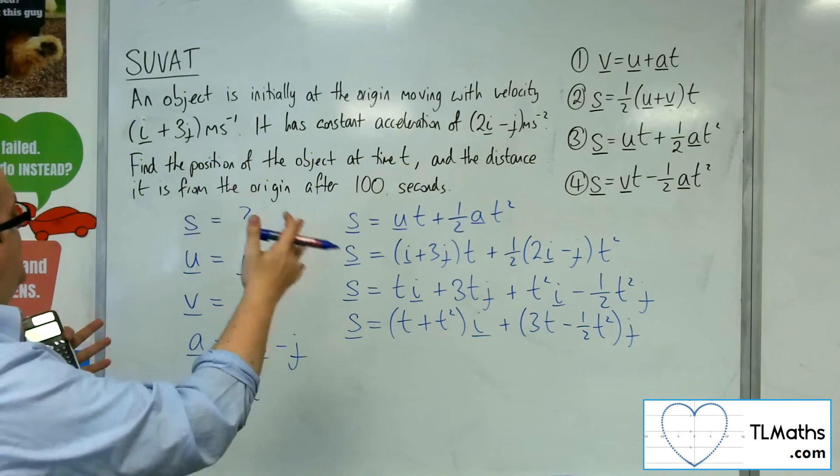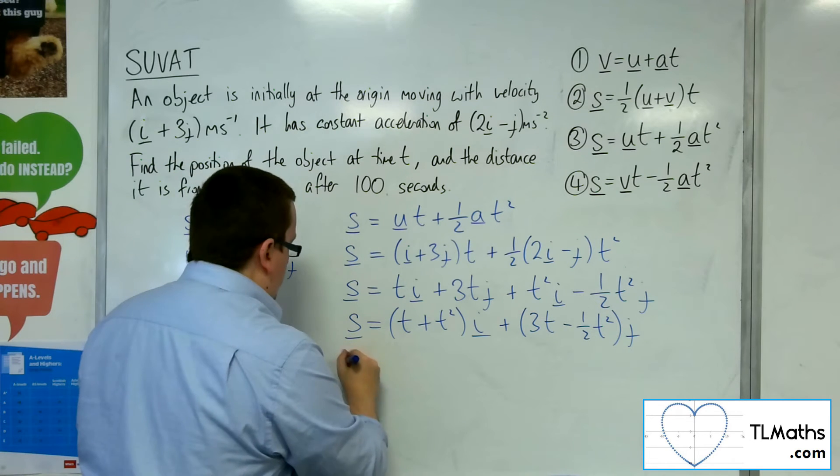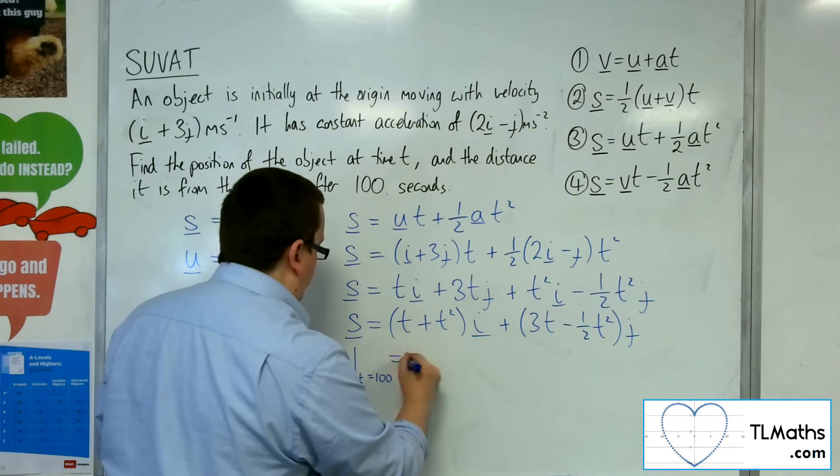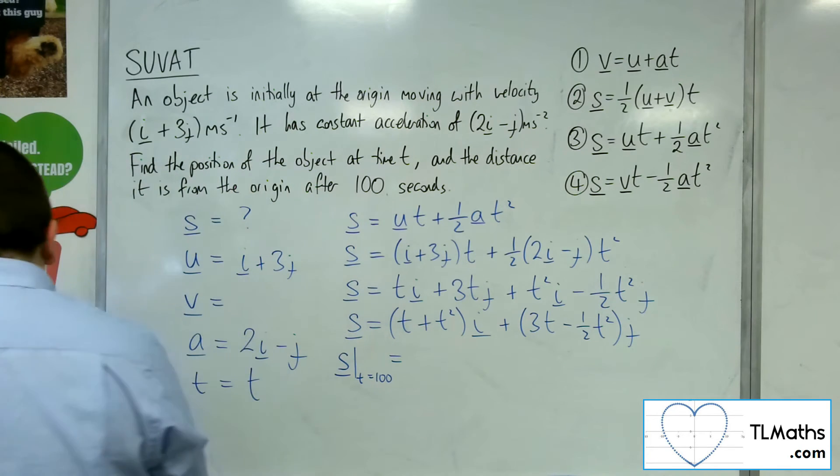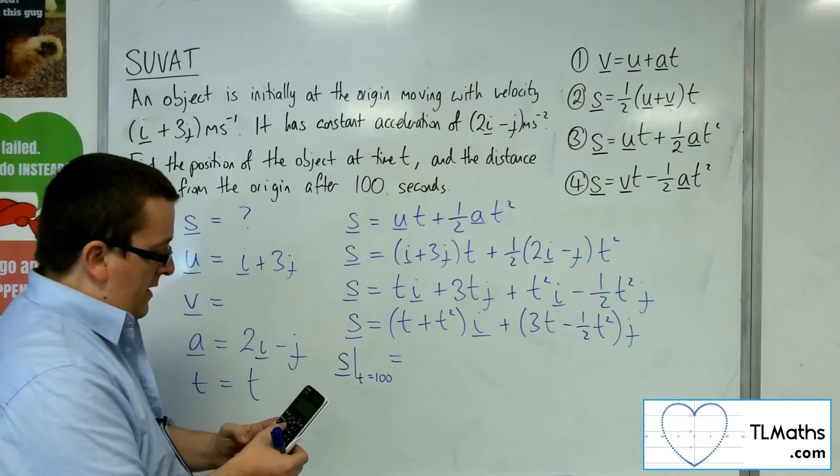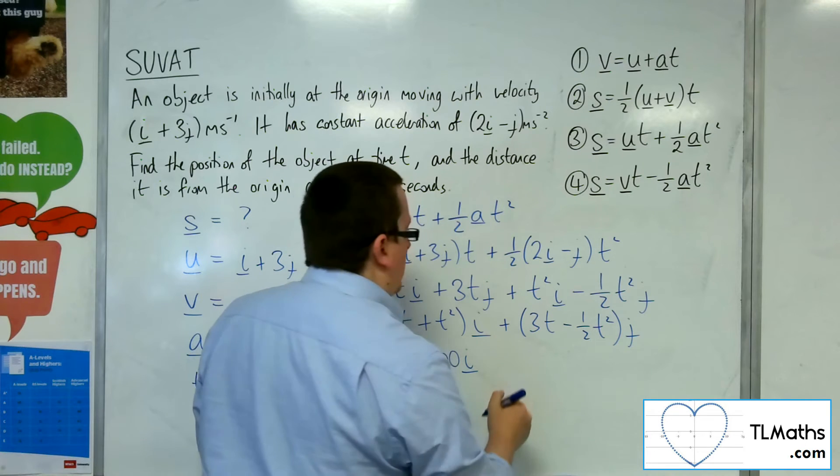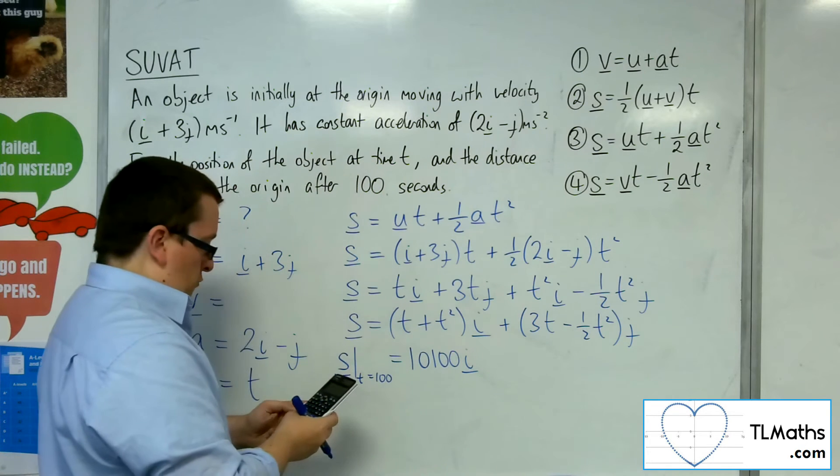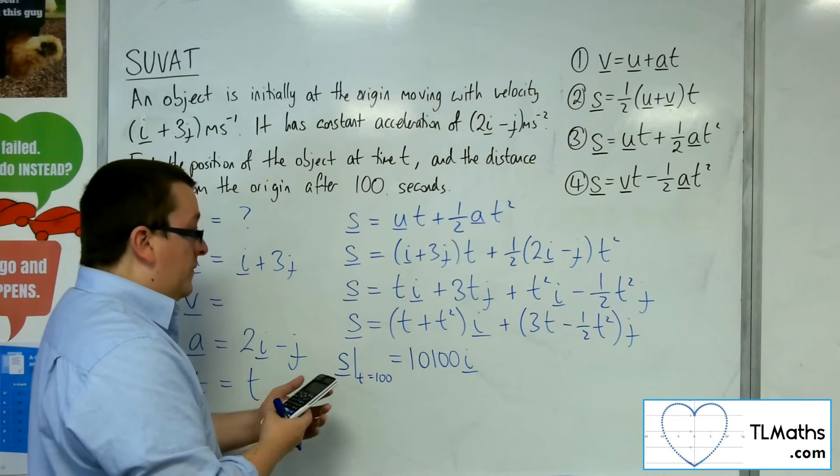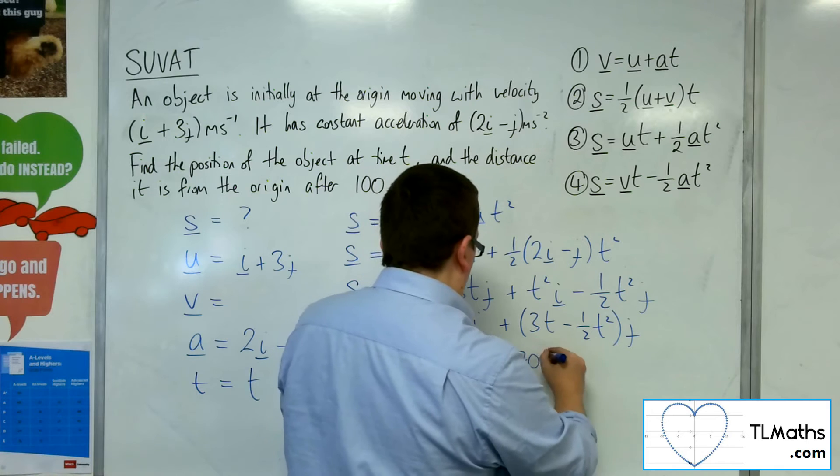So then the distance it is from the origin after 100 seconds. So, I want to first of all know what the displacement is when t is 100. So, I'm going to substitute 100 in. So, I get 100 plus 100 squared, so 10,100 i. And then 3 lots of 100 take away a half times 100 squared, and that gets me minus 4,700 j.